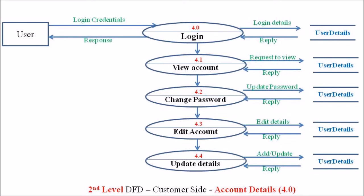All these individual processes are represented by elliptical structures. The one and only entity associated with these processes is the user, represented in a rectangular box. All individual communications between elements are represented by arrows, which denote data flow in a data flow diagram.